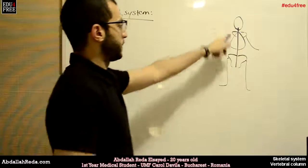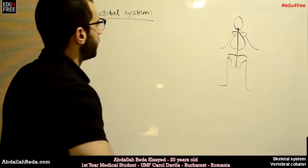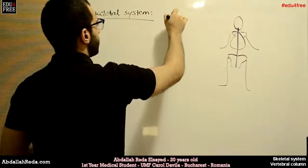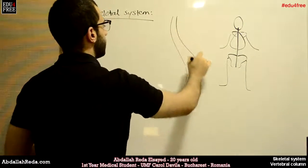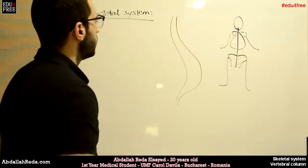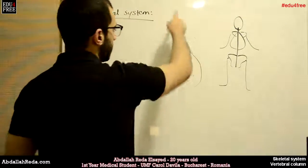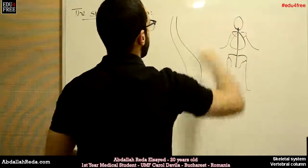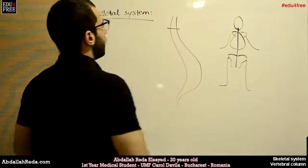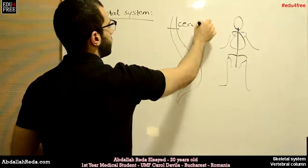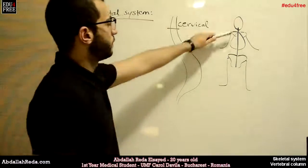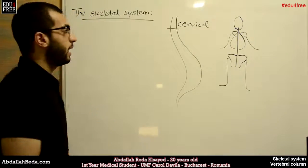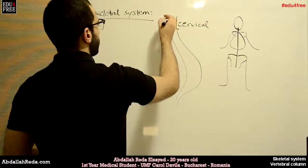The first thing we are going to talk about is the vertebral column. Looking at it from the side, it is not straight — it has an S shape. It has different regions. The first region is the region of the neck, called the cervical region. The vertebral column consists of vertebrae, and the cervical region has seven vertebrae.